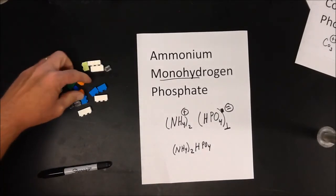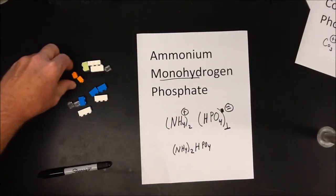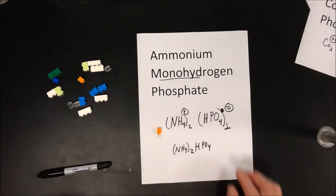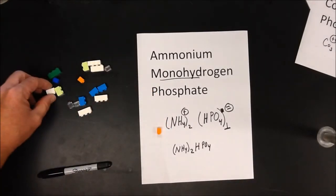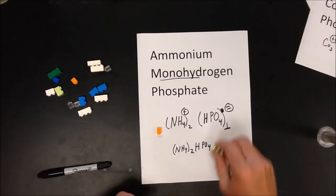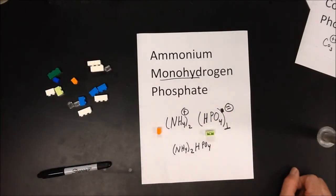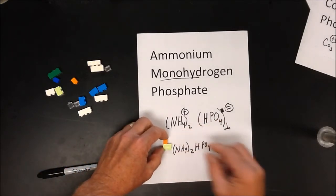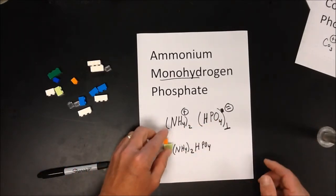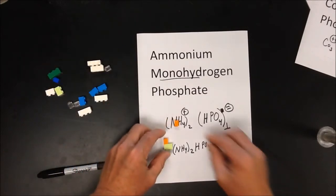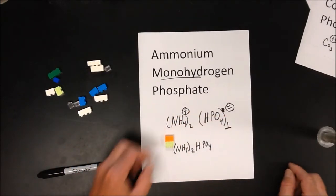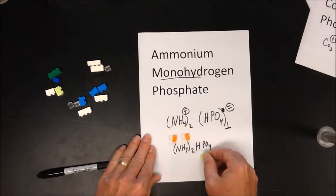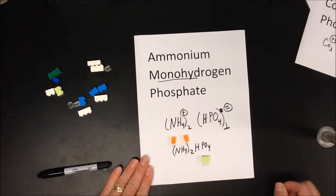Using Legos: an orange single-studded Lego represents ammonium (plus 1) and the green two-ported Lego represents monohydrogen phosphate (minus 2). One ammonium doesn't complete the block, so a second single-studded ammonium is added. Two ammoniums for each monohydrogen phosphate, confirming (NH₄)₂HPO₄.